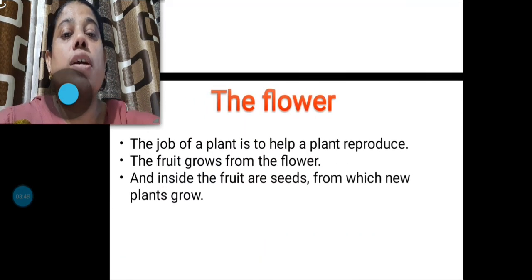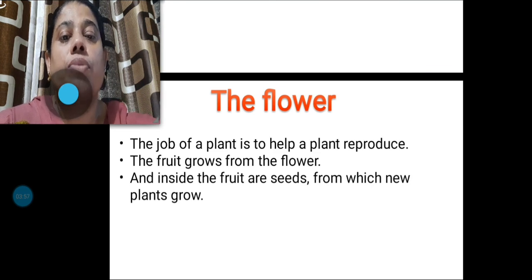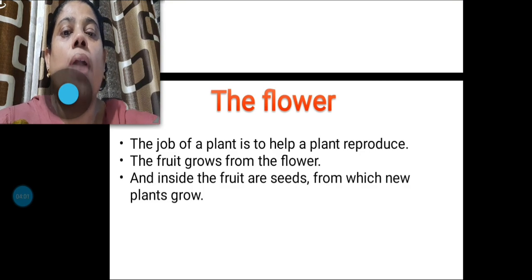Next is the flower. The job of a flower is to help plant reproduce. The fruit grows from the flower. And inside the fruit are seeds from which new plants grow.